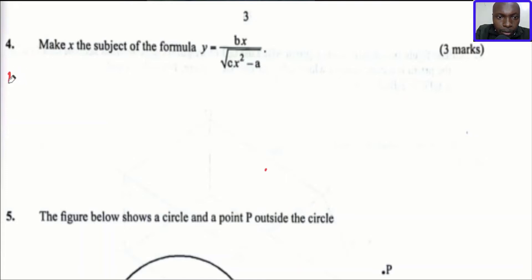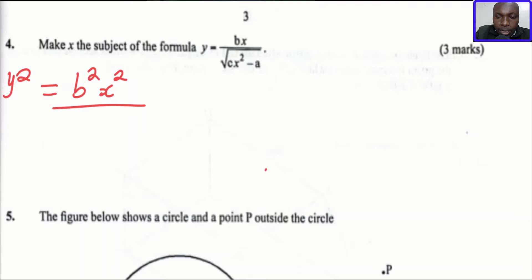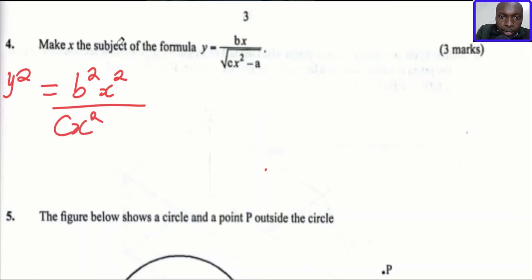Squaring the left hand side where we have y, we get y squared equals. We square bx, that gives b squared x squared. In the denominator, where we have the square root sign, squaring it causes the square root sign to disappear, so we have cx squared minus a.